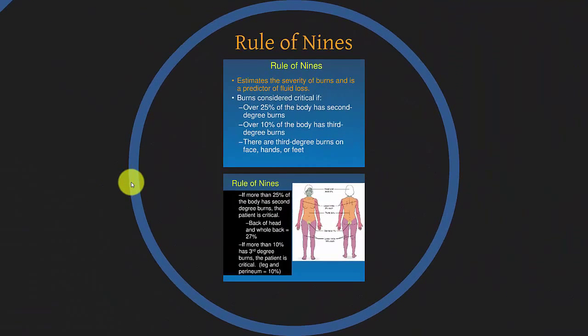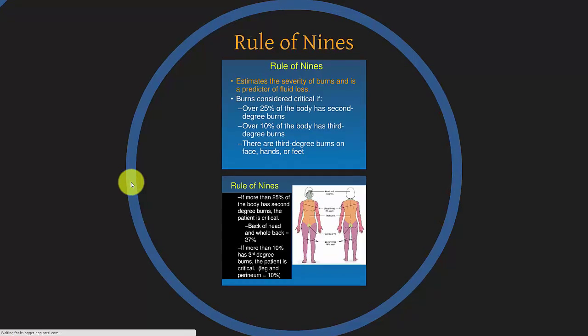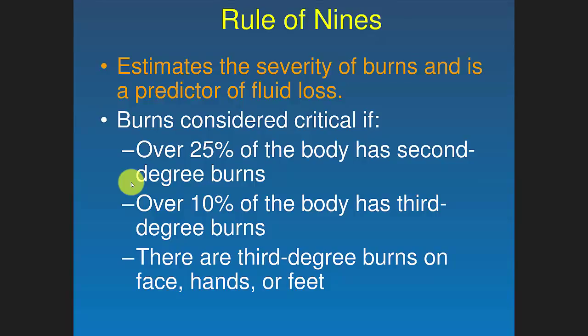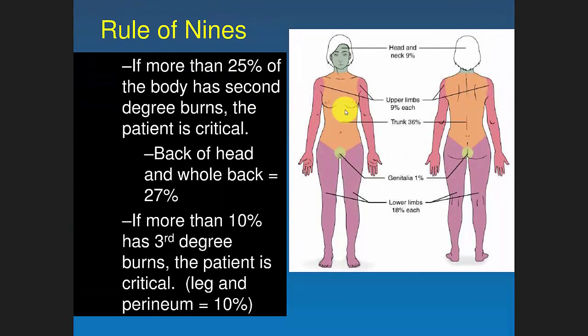One last thing about burns: if asked what the first threat to life is with burns, you might say infection — because that's usually what people ultimately die of — but the first threat to life is actually dehydration, because you have an open wound leaking fluid. A quick way to determine if a burn is critical is the rule of nines: divide the body into areas roughly equivalent to 9%. If over 25% of the body has second-degree burns, or over 10% has third-degree burns, the patient is in critical condition.